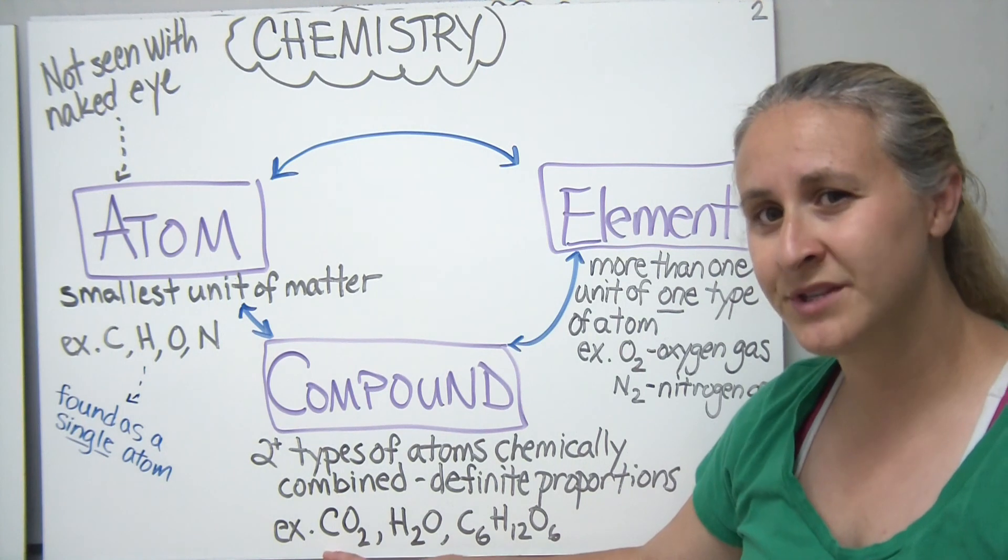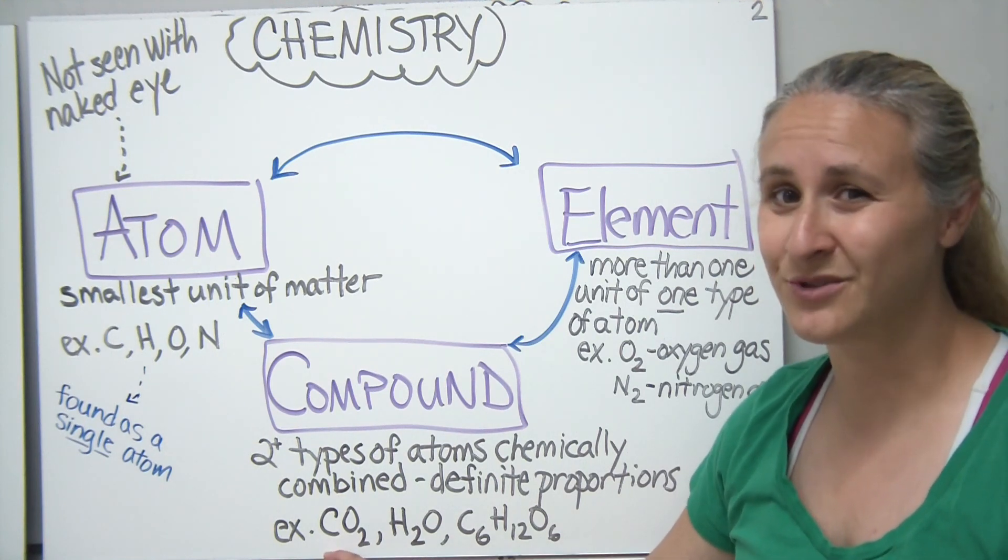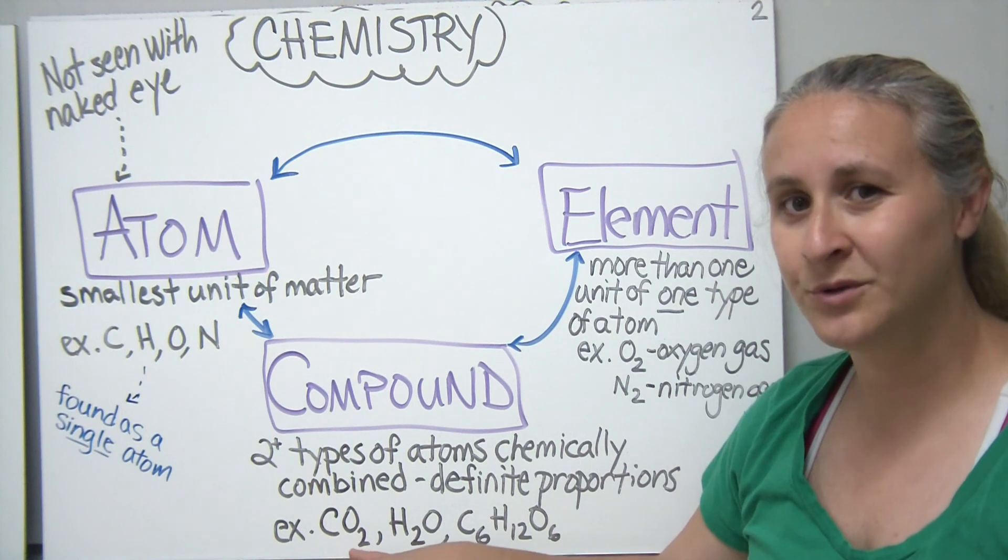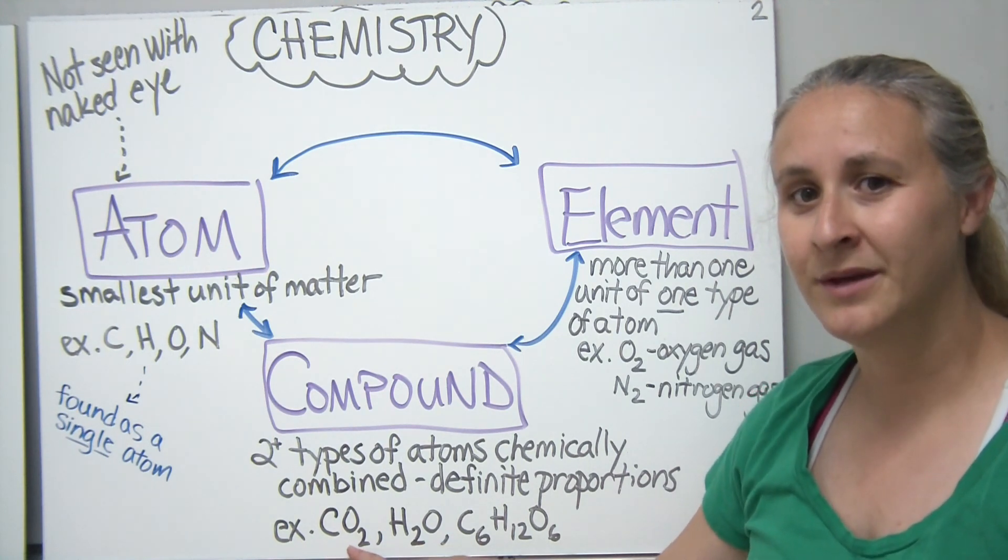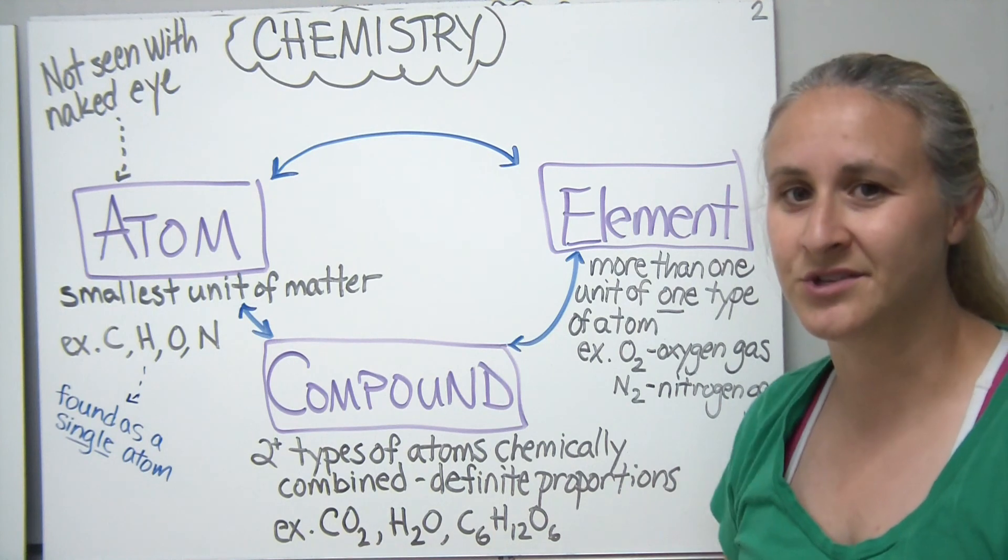If there's no number to the lower right of it, we assume that there's only one of them. So in the example of CO2 or carbon dioxide, we have one carbon atom bonded to two oxygen atoms.